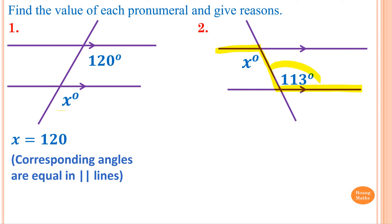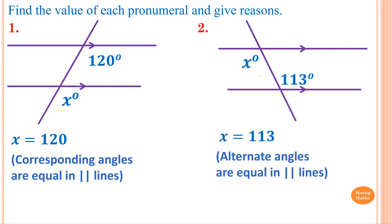This angle here is like the letter Z, so this angle and this angle are alternate — they are equal. Therefore X equals 113. The reason is: alternate angles are equal in parallel lines.